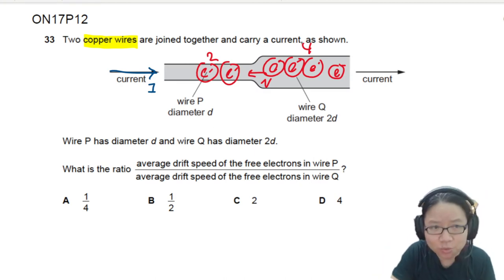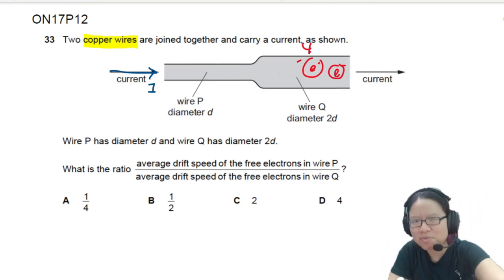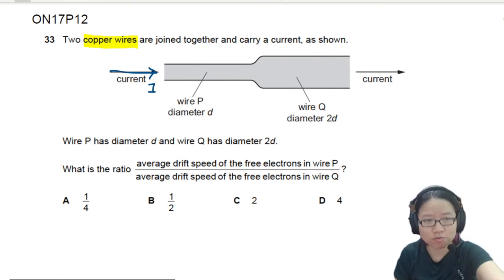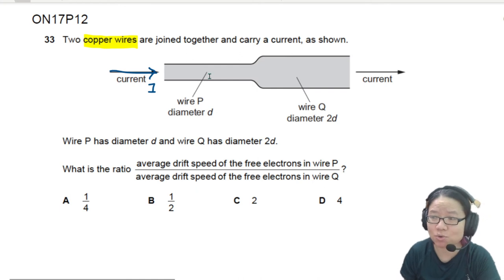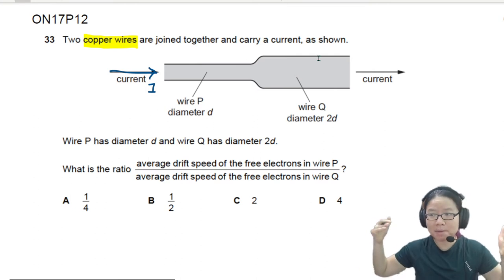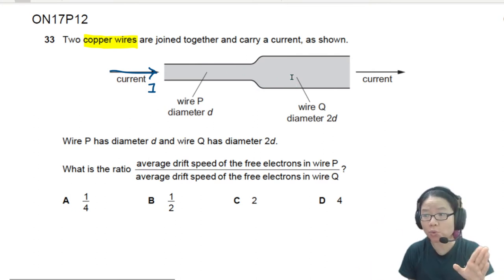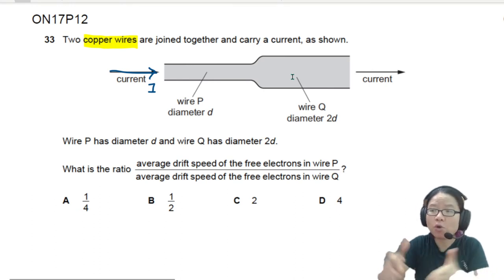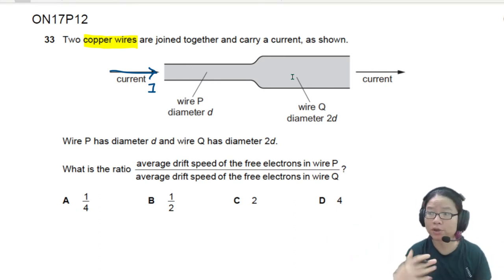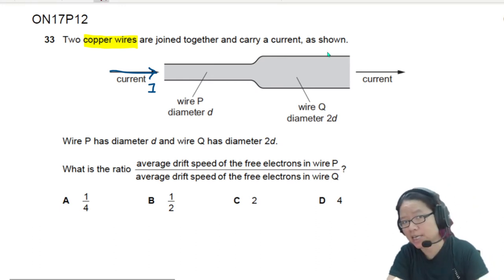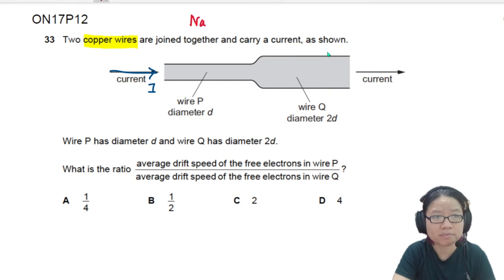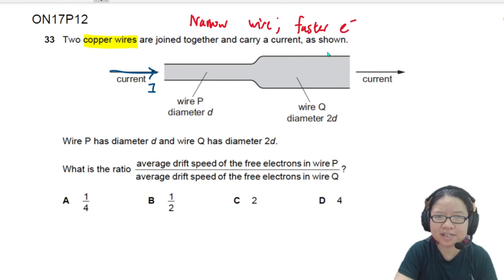So the number of electrons that will flow in the same amount of time has to be the same. The only thing I can tell you is that there's probably faster electron flow in wire B because this is narrower. So imagine it's like a hallway. You want the same amount of students or people to walk through the hallway in one minute. If the hallway is very wide, then you can take your time because you're not blocking anyone. But if the hallway is kind of narrow, then you need to walk faster so that more people can pass through. So let's see if my guess is true. I think that the narrower wire, faster electron.